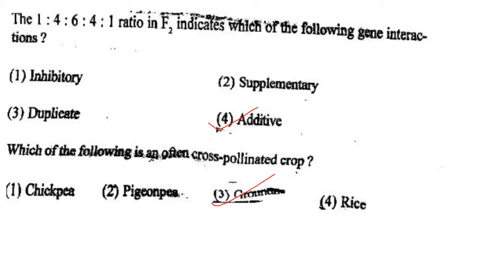Next one: In a 1:4:6:4:1 ratio in F2, which of the following gene interaction is indicated? Option 1, inhibitory; option 2, supplementary; option 3, duplicate; option 4, additive. Answer is option 4: additive.